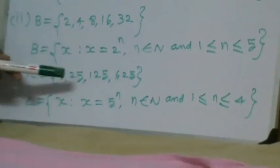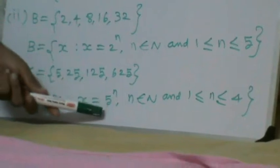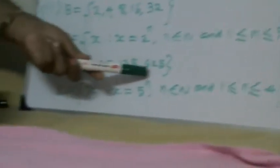So 5 power 1 is equal to 5, 5 power 2 is equal to 25, 5 power 3 is equal to 125, 5 power 4 is equal to 625.